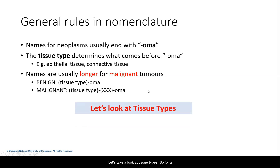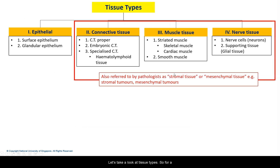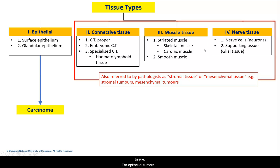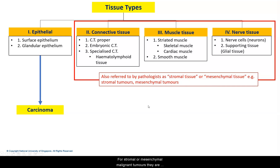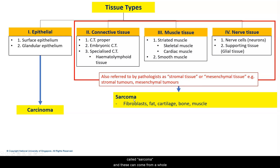Let's take a look at tissue types. You'll recall the four main tissue types: epithelial, connective, muscle, and nerve tissue. Malignant epithelial tumours, or epithelial cancers, are called carcinoma. For stromal or mesenchymal malignant tumours, they are called sarcoma.